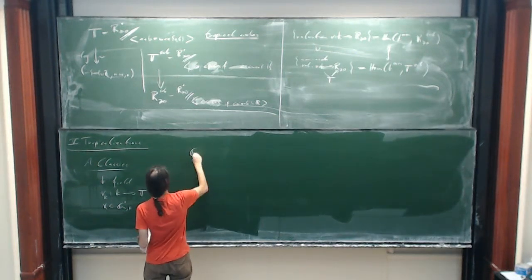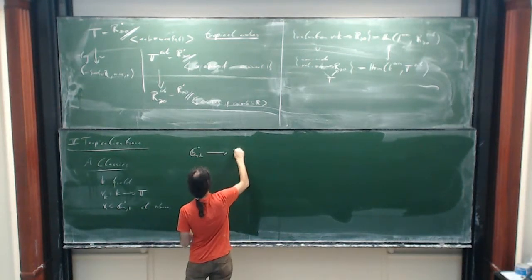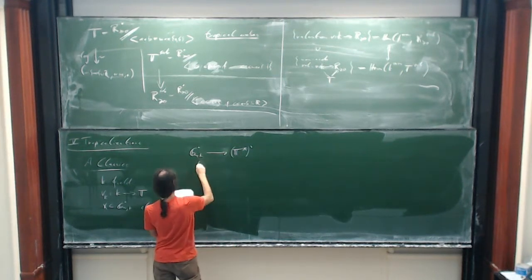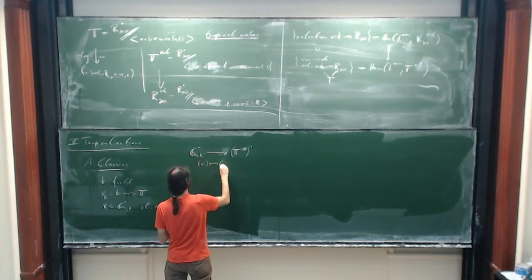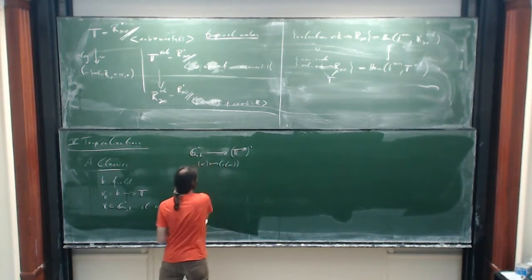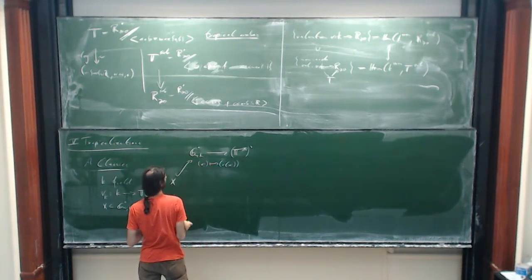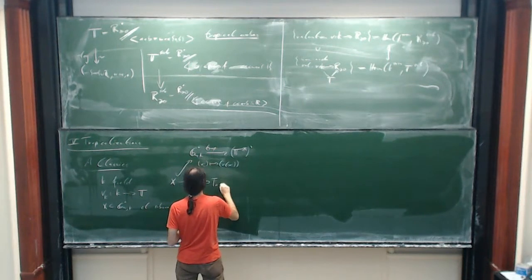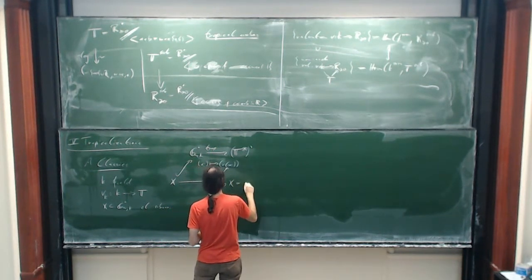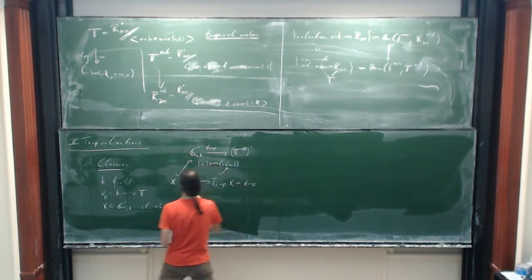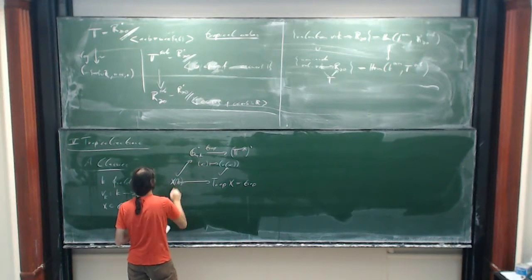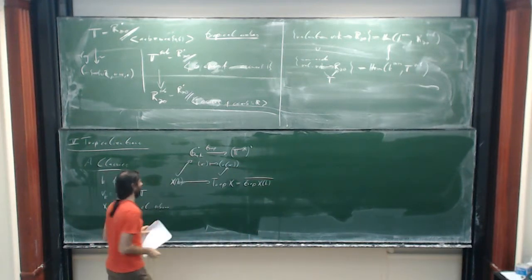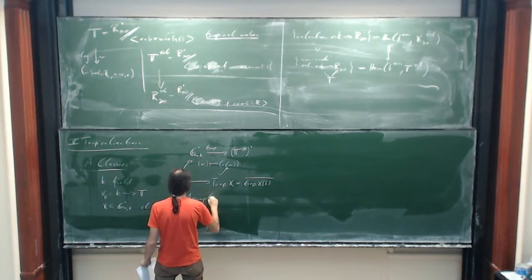What we get then is, first of all, a tropicalization map from the torus into the units to the n, which sends the tuple x_i to the tuple of the absolute values v(x_i). Then we have the sub-variety, and we map it with the same map and call the closure of the image — the topological closure of the image of the k-rational points — the tropicalization of X.